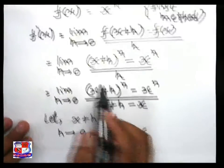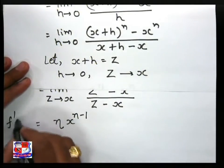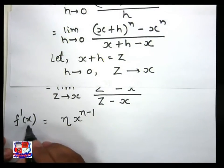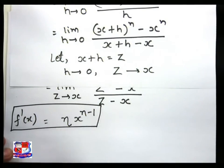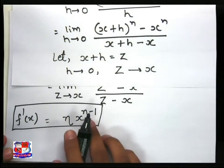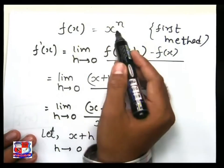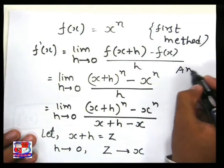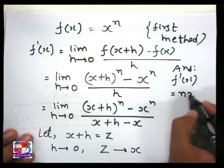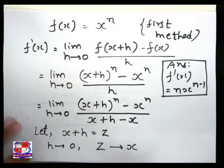So finally we get f dash x equal to n into x raise to n minus 1. In this way we can go to our final result: if f of x equals x raise to n, then f dash x equals n x raise to n minus 1. Now we move to our next question.